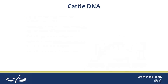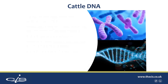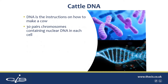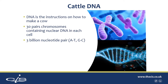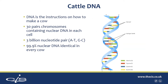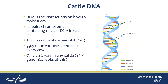Just a little bit of background on cattle DNA. DNA is basically the instruction kit on how to make a cow. There are 30 pairs of chromosomes containing nuclear DNA in each cell. You will see the chromosomes in purple on the right. Within these chromosomes there are three billion separate pieces of DNA called nucleotide base pairs, and these have the familiar names of A, T, G, C. 99.9% of nuclear DNA is identical in every cow, so we're only really interested in the 0.1% that vary in cattle.